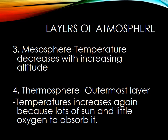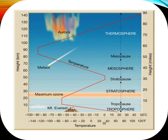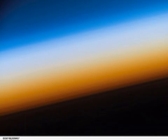The third layer, moving up from the stratosphere, is called the mesosphere. Here temperature decreases again as you move up, just like it does in the troposphere. Above that, the very last layer is the thermosphere — 'therm' meaning temperature and heat. Temperatures increase in this layer because there's a lot of sun and very little oxygen to absorb it, so it's very hot. In the mesosphere temperature goes down, and in the thermosphere there's no oxygen up there to absorb the sun's rays, so it is very hot.